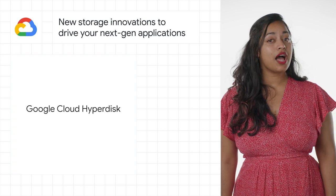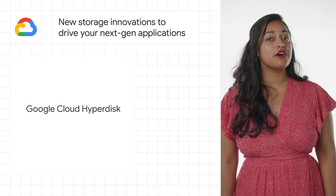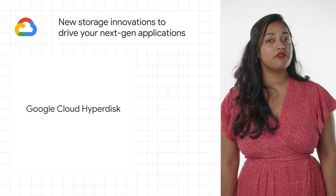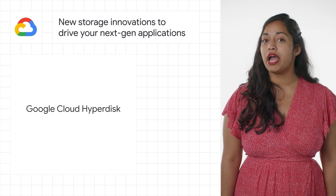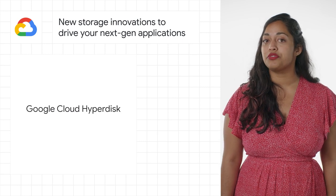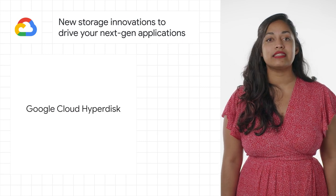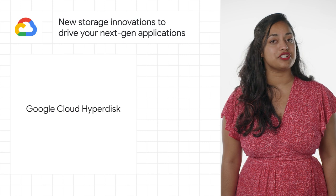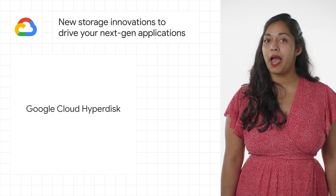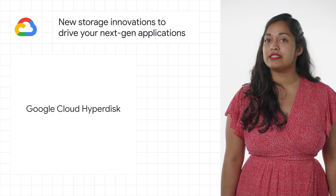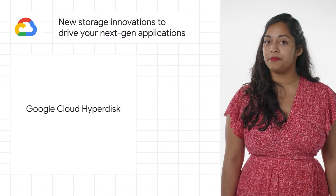Google Cloud Hyperdisk allows you to tune the performance of your block storage to your workload and provision IOPS and throughput independently for applications, and adapt to changing application performance needs over time.